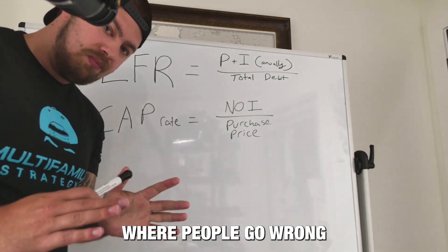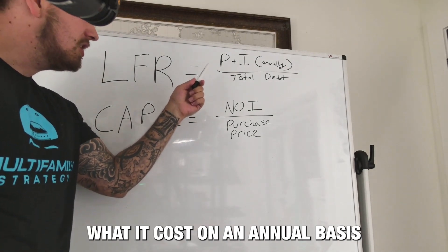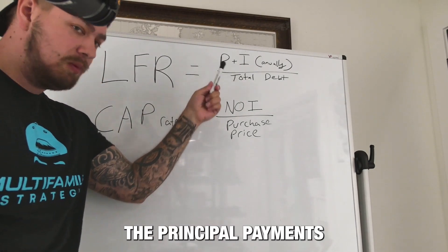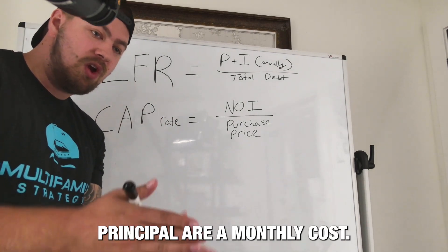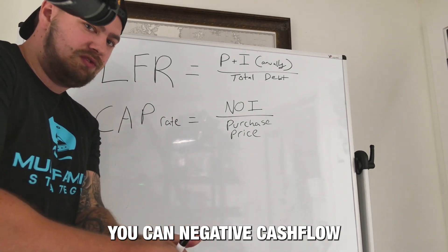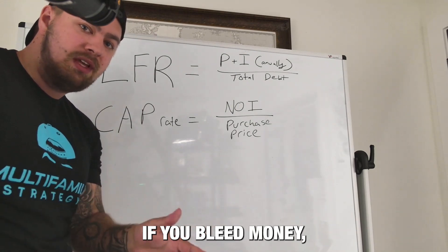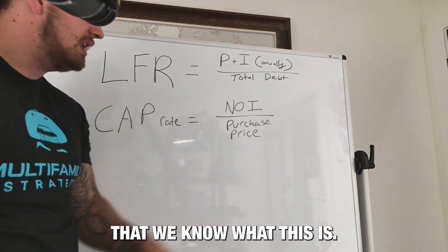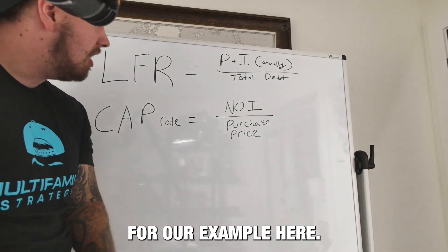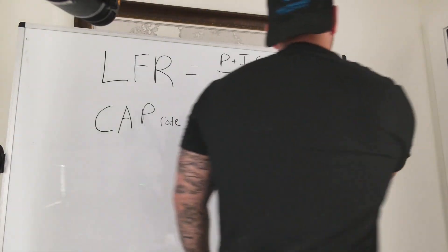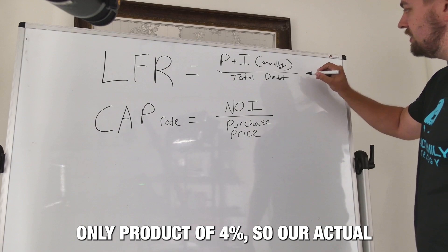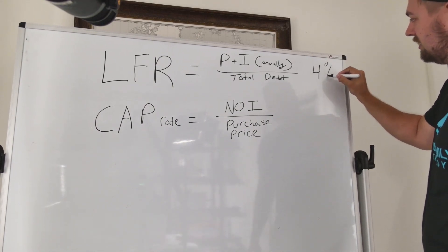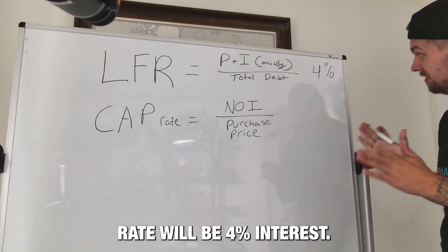Where people go wrong is they don't actually measure what it costs on an annual basis to run the property. The principal payments, while you are paying down principal, are a monthly cost. You can negative cash flow while building equity in your property. If you bleed money, you'll lose the property. For buying long-term cash flowing fixed rate debt, we know what this is. For our example here, let's say we're using an interest-only product of 4%, so our actual loan factor rate will be 4% interest.